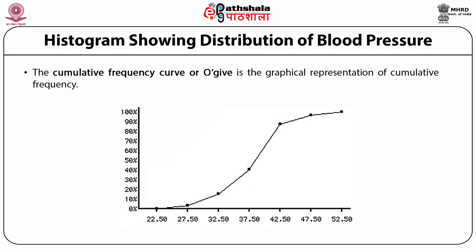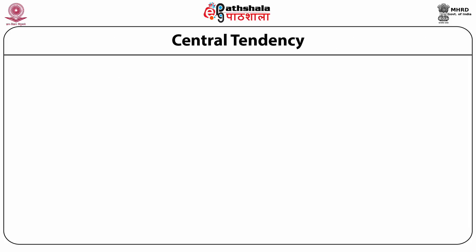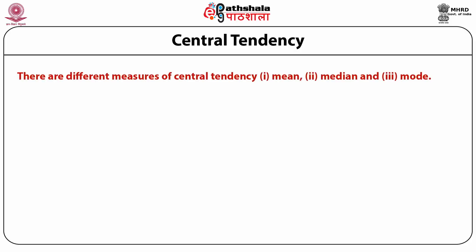The cumulative frequency curve or ogive is the graphical representation of cumulative frequency. Against each class interval, the corresponding cumulative frequency is plotted in the graph, and the graph appears to be of an S-shape. Now let's understand central tendency. Locating the center of a distribution is called central tendency.